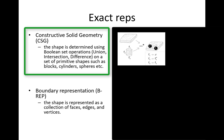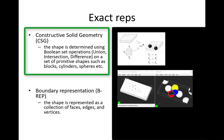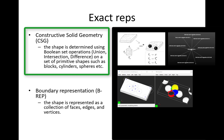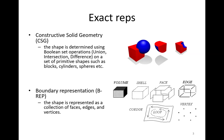A volumetric feature is basically the result of a Boolean operation between a stock volume or a previous feature and some feature descriptor. Imagine you have a stock volume — a piece of raw material — and you want to drill a hole: you take a cylindrical tool and run a Boolean subtraction between the two operands, then store that sequence of operations in your application. You end up with something that looks a little like a CSG tree.